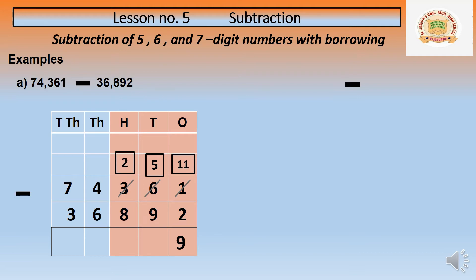After borrowing, the tens place becomes 150. To avoid confusion, I am removing the zero and working with two digits only — so in the tens place we have 15, and we are going to minus 9.